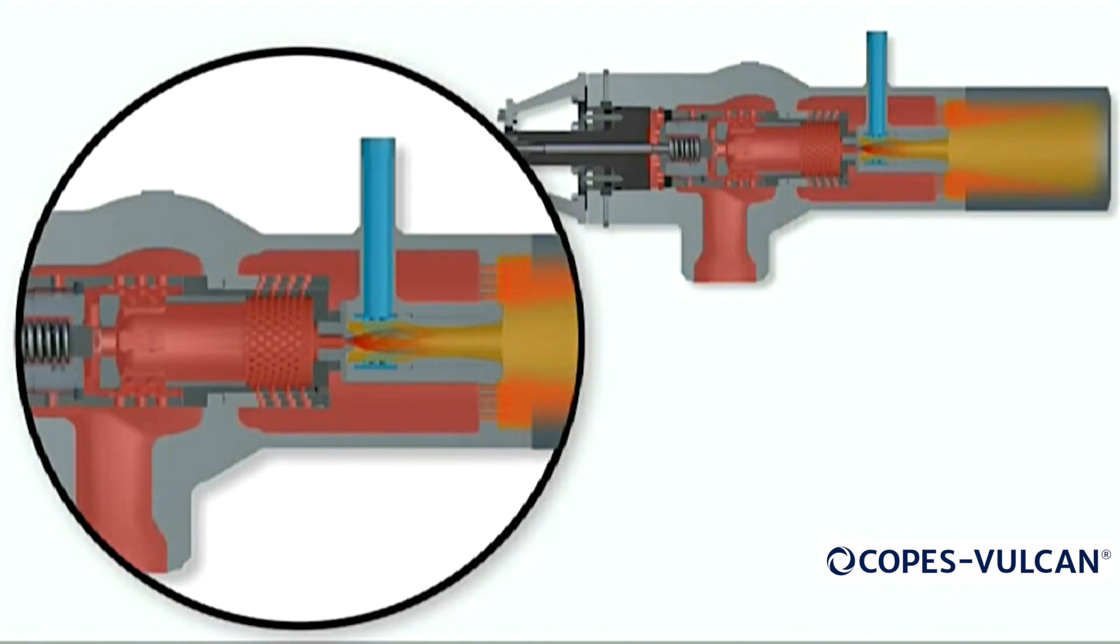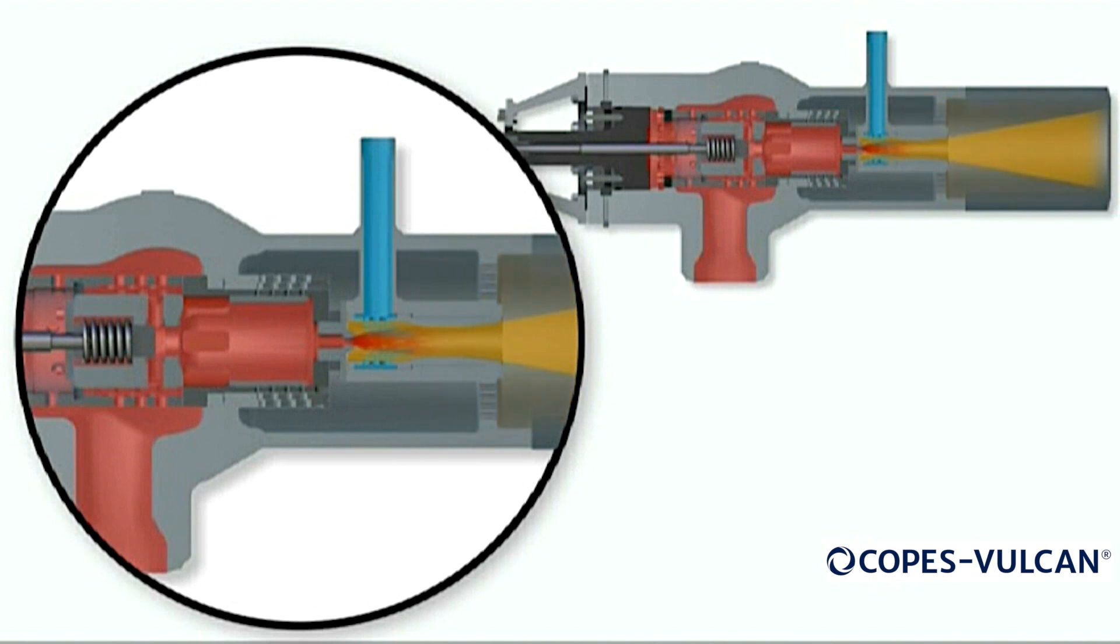When a closing signal is received, the main plug smoothly extends back into the cage, which proportionately decreases the steam flow rate. The main plug continues to close until the main seat is engaged. At this point, virtually all the steam flow has ceased. The actuator continues to extend until the pilot plug engages with its seat.